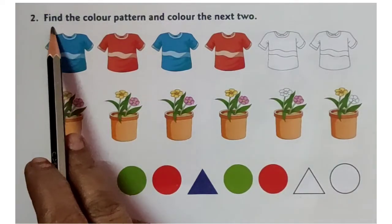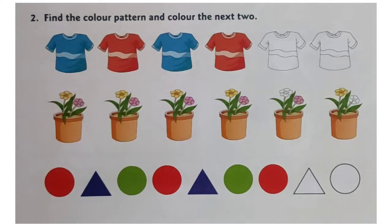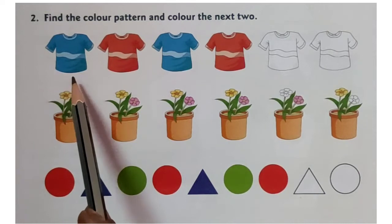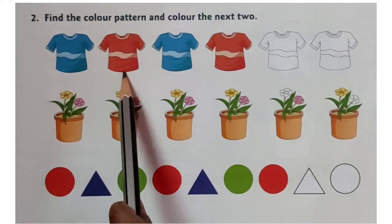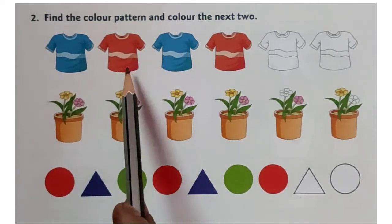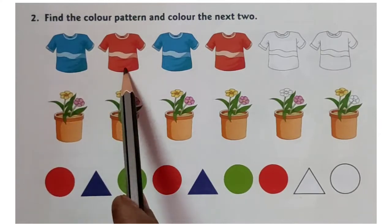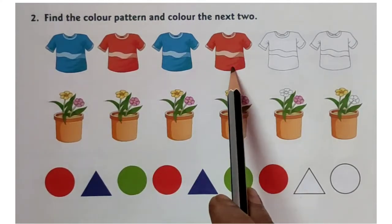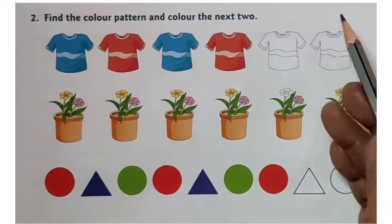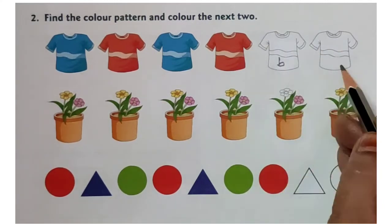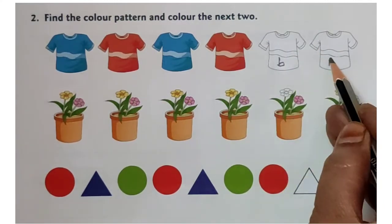Now, let us move on to the second question: find the colour pattern and colour the next two. Here, we have t-shirts. They are blue and red colour. So, after blue, we get a red colour t-shirt. So, here, after red, we get blue. Colour this t-shirt blue and this t-shirt red.